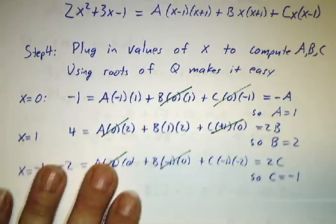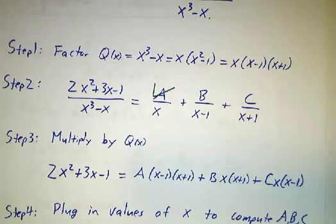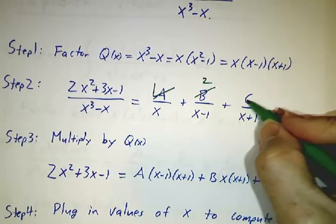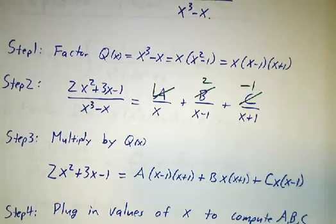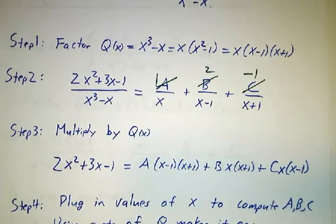So our answer is that A is 1, B is 2, and C is negative 1. And we have now simplified this ratio as a sum of terms that are easier to integrate.